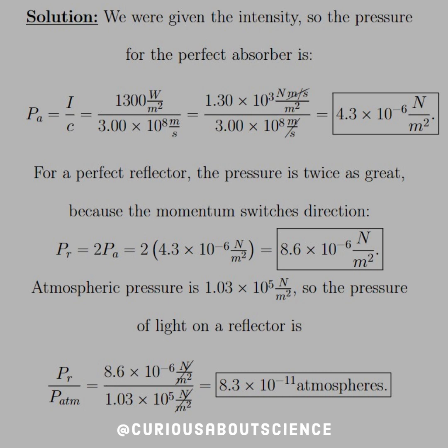For a perfect reflector, the pressure is twice as great because momentum switches direction. So we have reflection. Everything hits and everything bounces off. So the pressure has to change. And we have two times the pressure of the absorber. So we'll multiply that by two and we get 8.6 times 10 to the negative 6 newtons per meter squared. No big deal there.